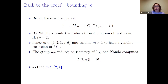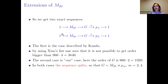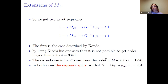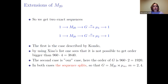Both cases m = 2 and m = 4 are possible. Kondo's exact sequence gives m = 4 (the maximal case), and our new exact sequence gives m = 2. To show no larger extension is possible, one checks Xiao's list and studies each group. One can also find a section showing the sequence splits, so g is a semi-direct product of M₂₀ with μ_m for m equal to 2 and 4.